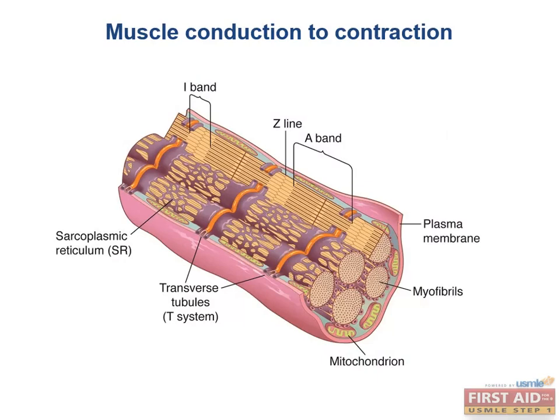Here you see the structure of a muscle cell with multiple myofibrils. You can think of muscle fascicles as made of muscle fibers, which are themselves made of myofibers. What are myofibers comprised of? Sarcomeres, which are the smallest functional units of muscle cells.